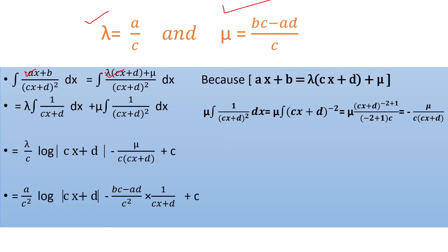Now split this into separate fractions: λ(cx + d)/(cx + d)² + μ/(cx + d)². The first term simplifies as cx + d cancels with one factor in the denominator, giving λ × 1/(cx + d). The second term is μ × 1/(cx + d)². So you have λ∫1/(cx + d) dx + μ∫1/(cx + d)² dx.